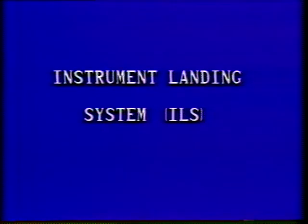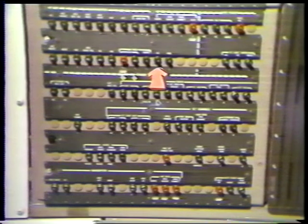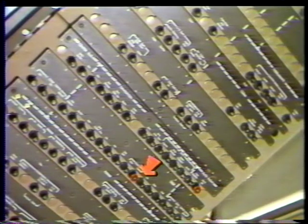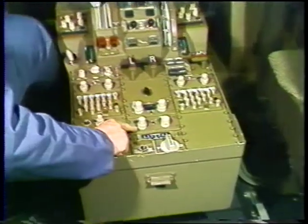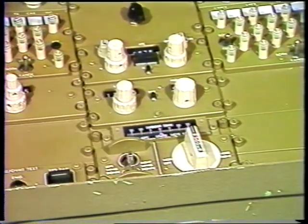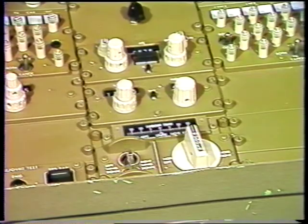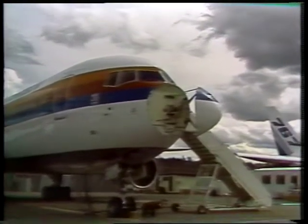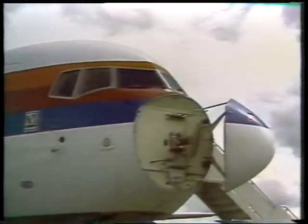The next system to be presented is the Instrument Landing System, or ILS. Power is provided through the left, center, and right ILS circuit breakers on the P11 panel. The ILS control panel is located on the aft pilot's control stand P8. The ILS antennas are located in the nose radome above and below the weather radar antenna.